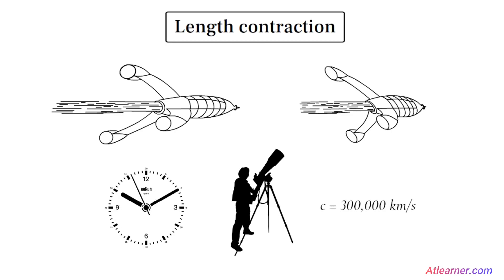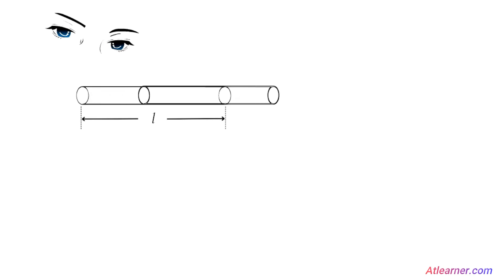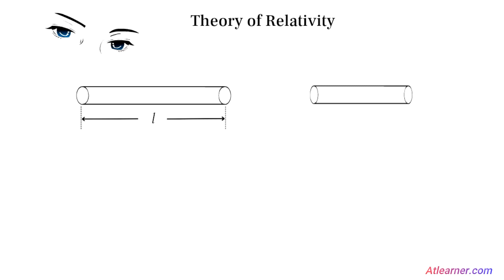To understand this concept, let's consider the following scenario. Imagine a rod that is at rest relative to an observer — the length of the rod is L. Now, imagine that the same rod is moving relative to the observer at a high speed. According to the theory of relativity, the length of the rod will appear to be shorter than L.